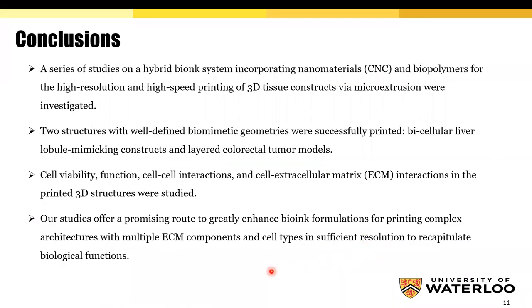To conclude, we developed a series of hybrid bioink systems incorporating nanomaterials — CNC — and biopolymers for high resolution and high-fidelity printing of 3D tissue constructs via microextrusion. We found that CNC with proven biocompatibility played a vital role in improving the bioink's biological and mechanical properties. Two structures with well-defined biomimetic geometries were successfully printed, including bicellular liver lobule-mimicking constructs and layered colorectal tumor models. Cell viability, cell-to-cell interactions, and cell-to-ECM interactions in the printed 3D structures were studied as well. Our studies offer a promising route to greatly enhanced bioink formulations for printing complex architectures with multiple ECM components and cell types in sufficient resolution to recapitulate biological functions.